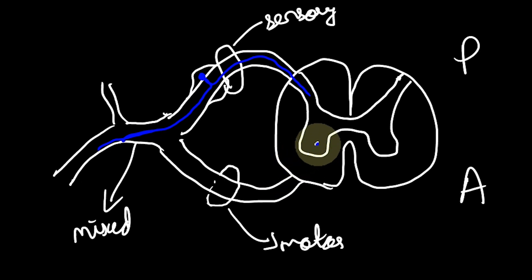But in the ventral root you have the anterior horn cell that is present in the ventral horn of the gray matter. From the anterior horn cell you have a neuron that exits out.